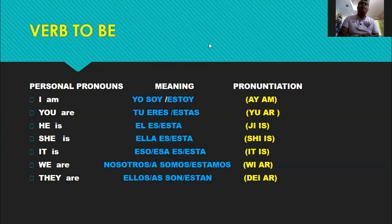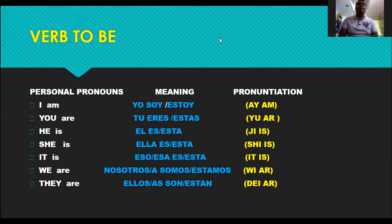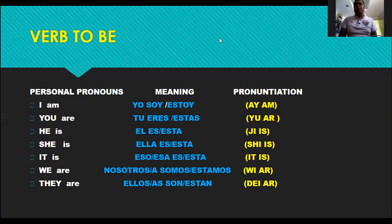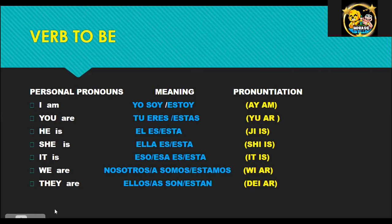Then what we saw was the verb to be. I am — yo soy, yo estoy; you are — tú eres, tú estás; he is — él es, él está; she is — ella es, ella está; it is — eso es, eso está; we are — nosotros/nosotras somos o estamos; and they are — ellos/ellas son o están. Okay, that's with the verb to be.